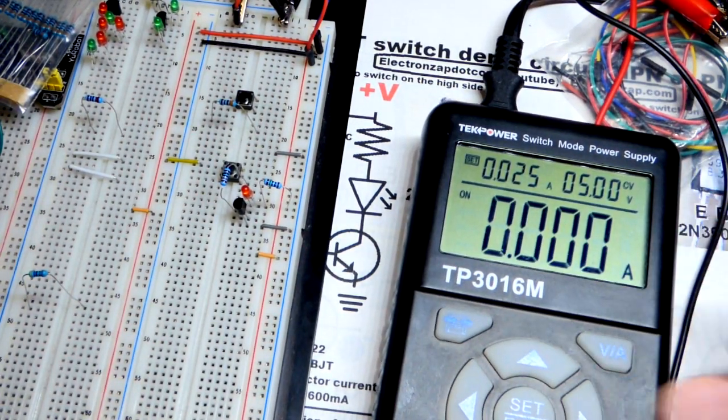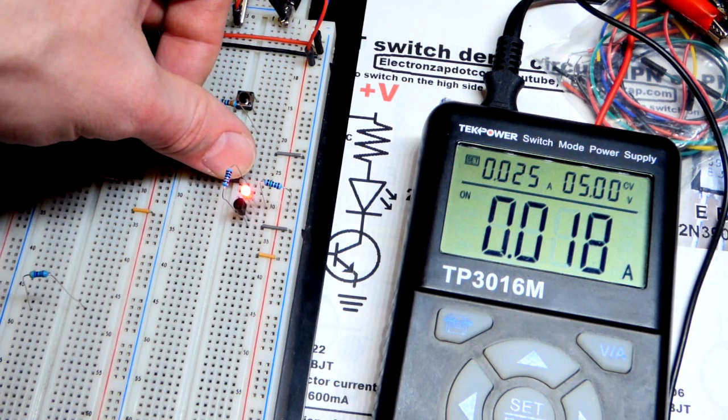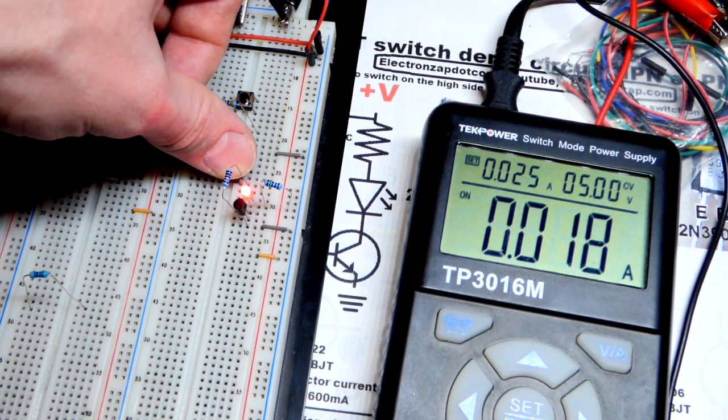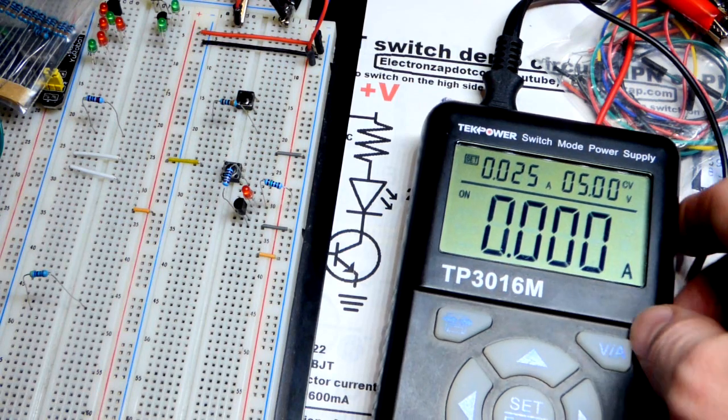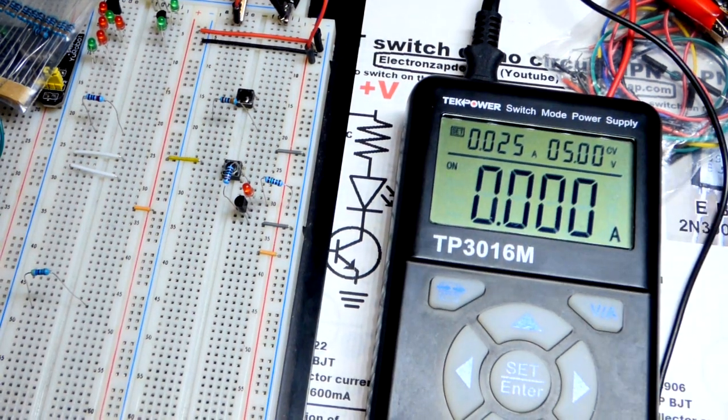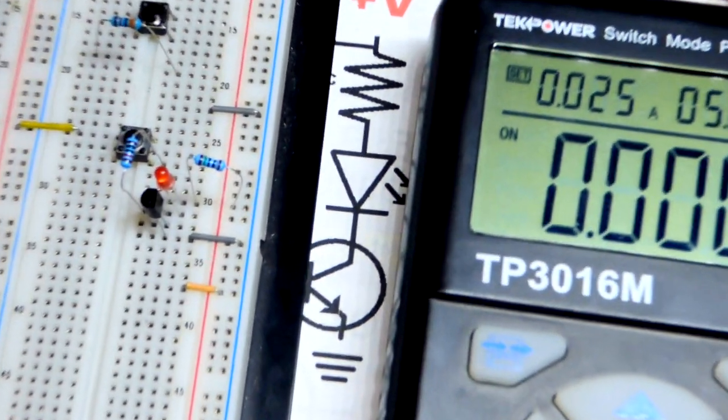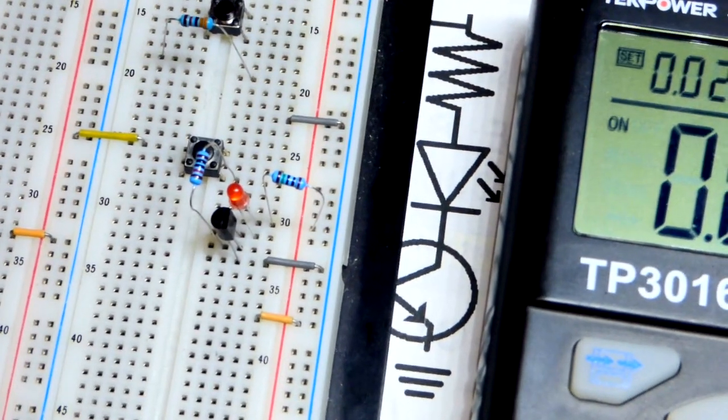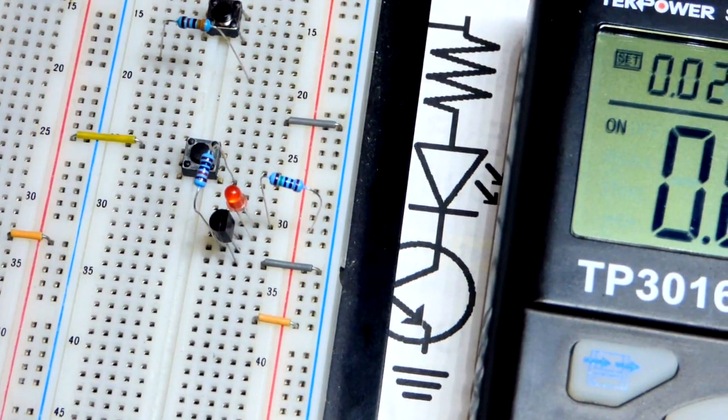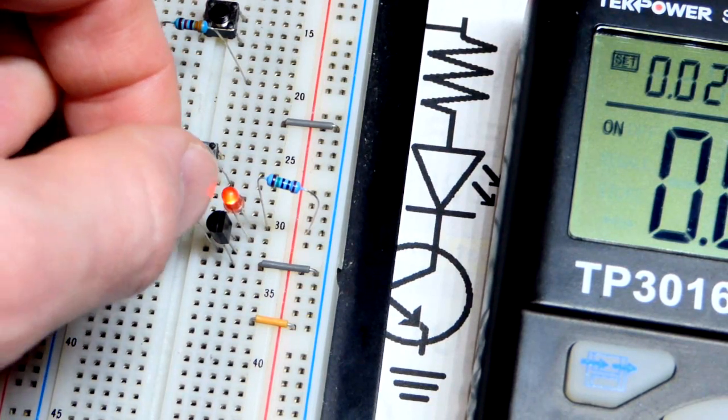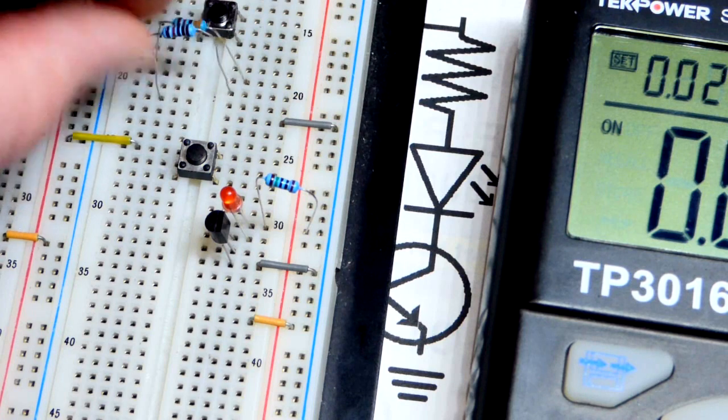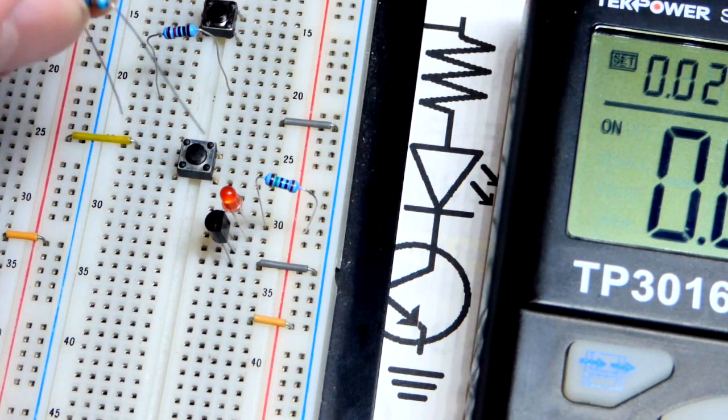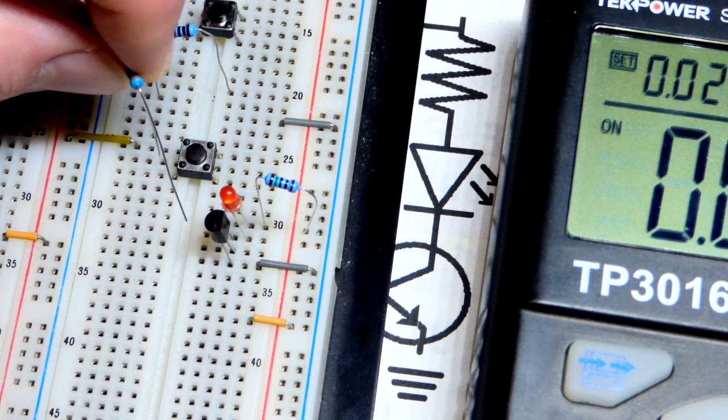And we already looked at the base current. I'm not going to focus on that anymore. And if I hit the switch, you can see there that we got our 18, 19, whatever. There we go, 19. Again, it's probably like borderline. So that was with the 10 kilo ohm resistor, which I estimated will work for about a 50 gain.